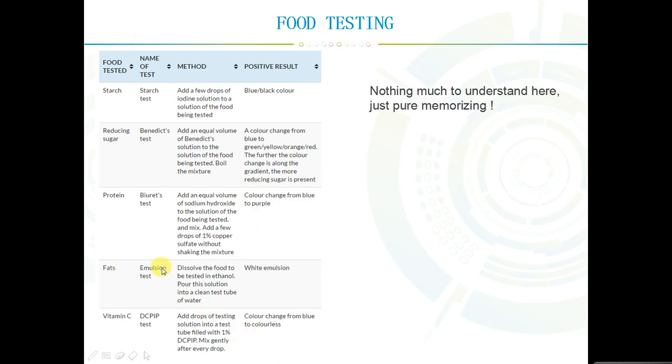If you're testing for fats, this is called the emulsion test, where you dissolve the food into ethanol. You dissolve the food into ethanol and then pour the solution into a clean test tube of water. If you get any emulsion or anything white going on, that means you've got fat present in the food. If not, you don't.